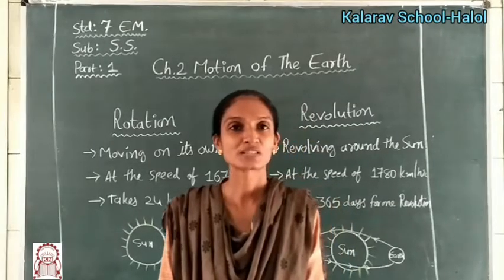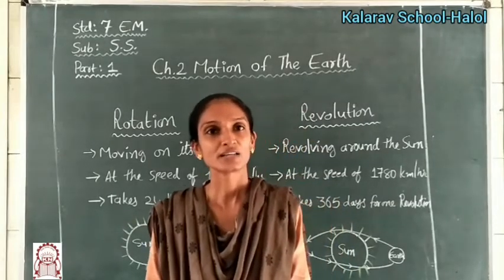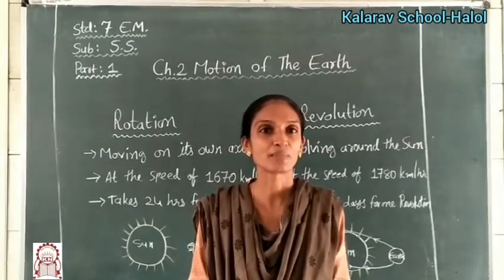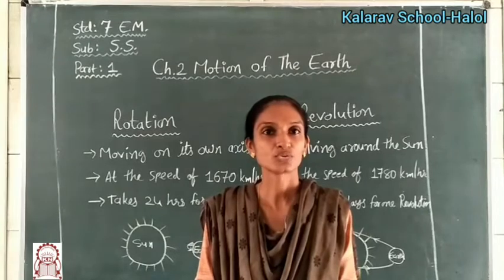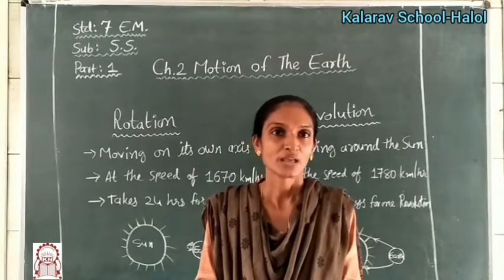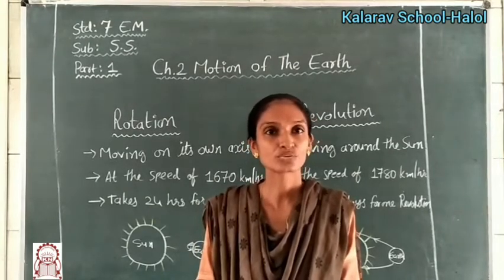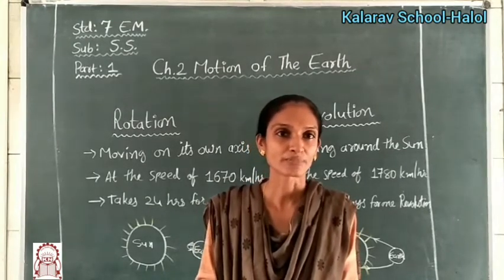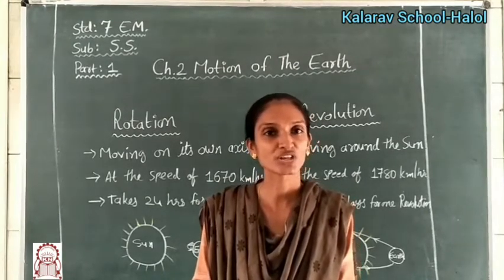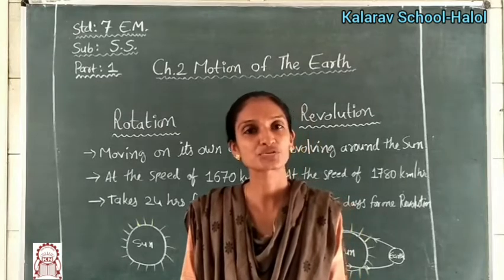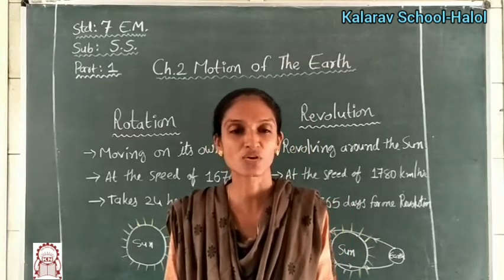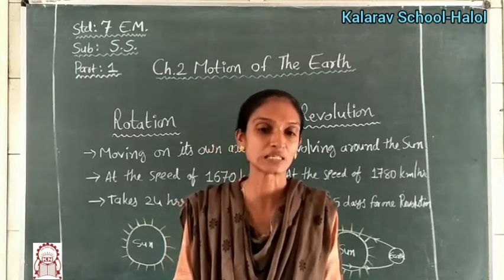Hello students. In our earlier session we completed Chapter 1, which covered 2 states — Kanaoj and Vatapi — and the rulers Harshvardhan and Kokishi. We have completed those 2 states.